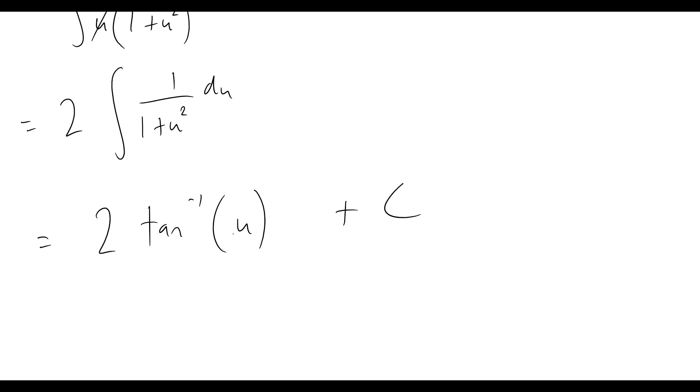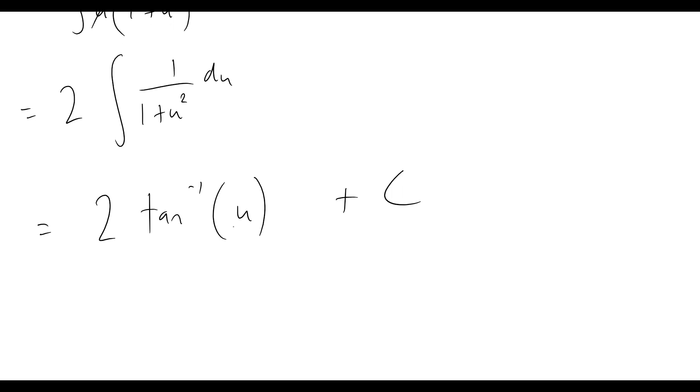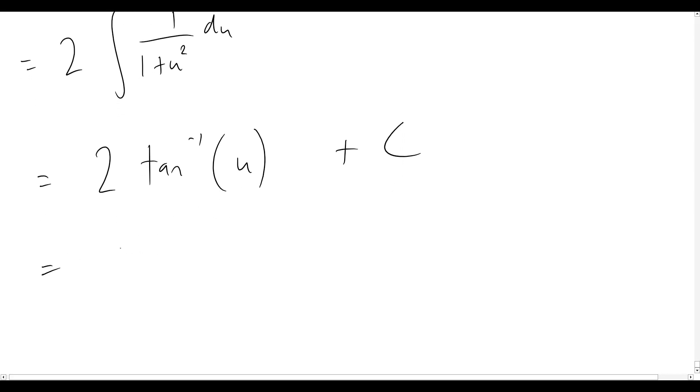Okay, now quick reminder, what was u? u was equal to the square root of x. So let's quickly put that in for our last step here. So again, now our final answer, fully simplified, is 2 tan inverse of the square root of x plus c.